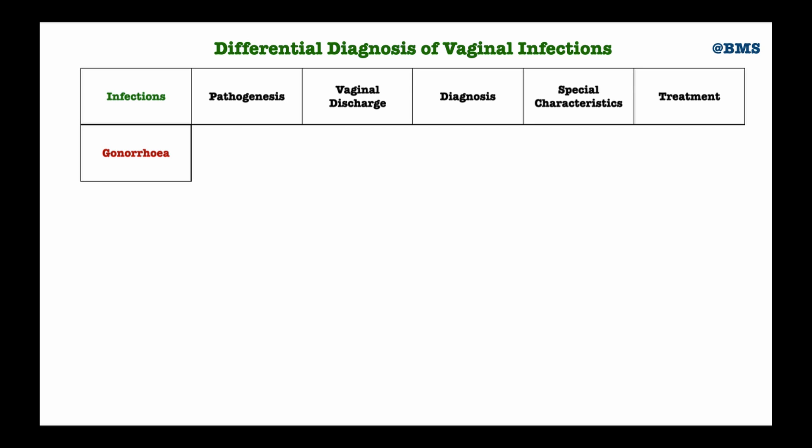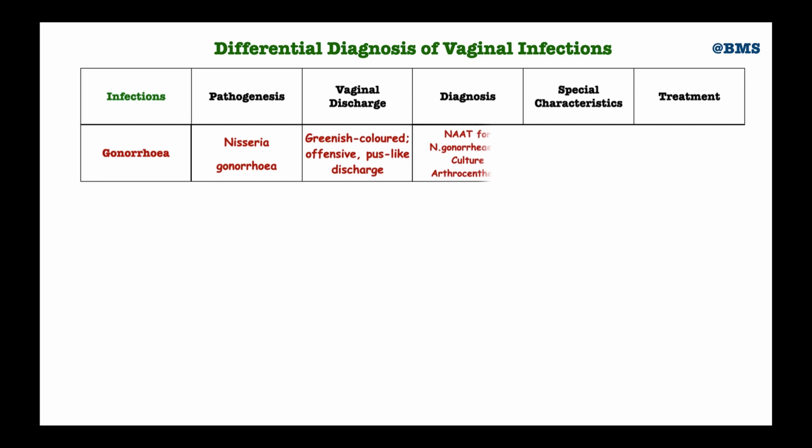Starting with gonorrhea, the causative organism is Neisseria gonorrhoeae. The discharge seen in gonorrhea is usually greenish in color, offensive, and pus-like. For diagnosis of gonorrhea, we use the Nucleic Acid Amplification Test (NAAT) specific for Neisseria gonorrhoeae.